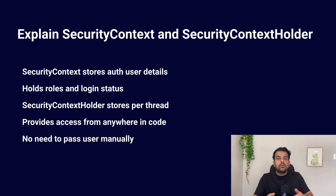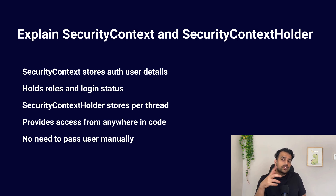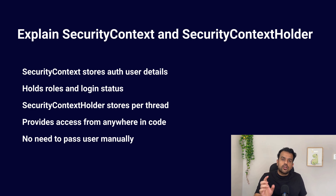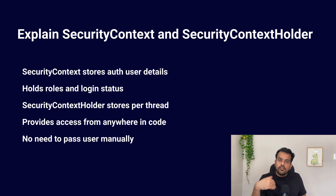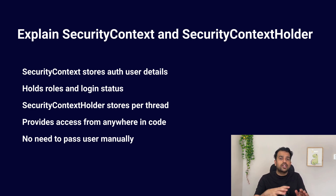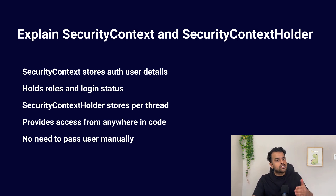In simple terms: SecurityContext stores authentication details, and SecurityContextHolder provides access to that context from anywhere in the code. In a typical request, after successful authentication Spring Security sets the Authentication object inside the SecurityContext. If you are inside a controller, service, or any other bean, you can call SecurityContextHolder.getContext().getAuthentication() to get the current user details. This is how Spring Security makes user information available throughout the request handling — you do not have to pass the user object manually to each layer of the application.